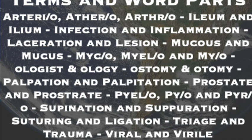-Ologist means specialist — a gerontologist is a specialist in diagnosing and treating diseases associated with aging (geront = old age). -Ology means study of — neonatology is the study of disorders of the newborn. -Ostomy means to surgically create an artificial opening — a colostomy is a surgical opening between the colon and body surface. -Otomy means surgical incision — a colotomy is a surgical incision into the colon.